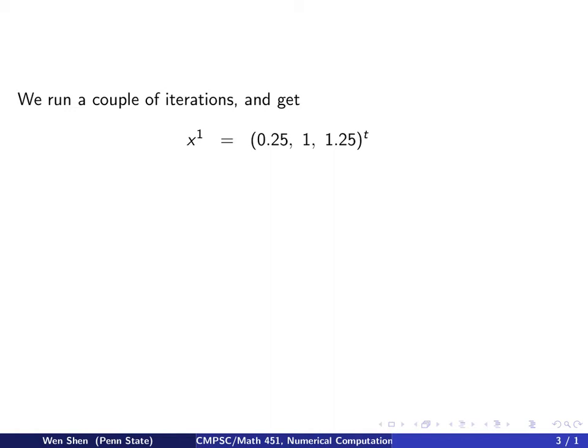So with the iteration setup, we can perform it as many times as we want. For a couple of iterations, let's look at what we get. If you put in x0 on the right-hand side, this is the x1 you get: 0.25, 1, 1.25.